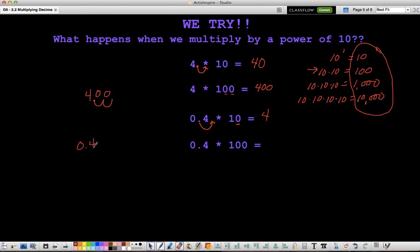Let's try it with 100. Again, I have 0.4 tenths, and I have two zeros, so I have to move the decimal twice to the right. So we have 40. So 4 tenths times 100 is 40.